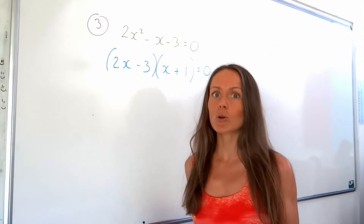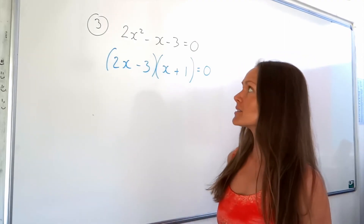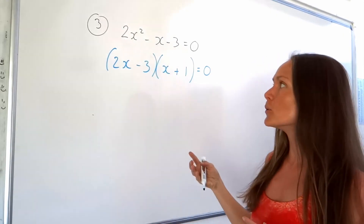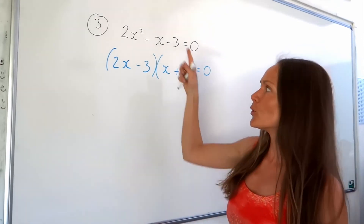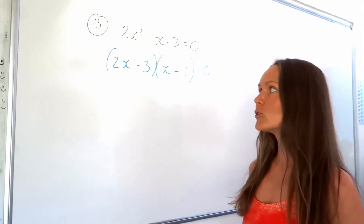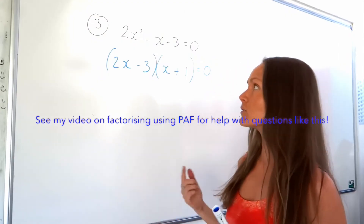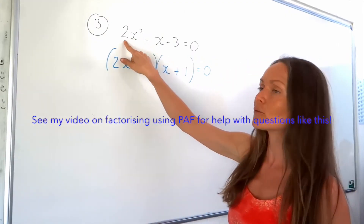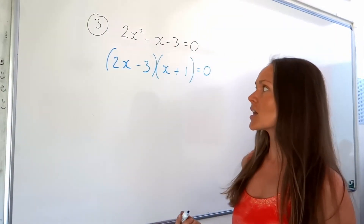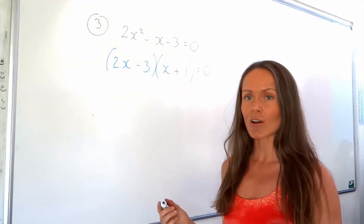Here I've got another quadratic, and just to save time I've factorised this one already. This one's a little bit harder to factorise because there's a number in front of the x squared. You can either put this into brackets using sensible guesswork, or you can use that method PAF — P-A-F — and I explain that in another video on how to factorise when there's a number in front of the x squared. Do your factorising, and then just like before, consider the values of x when you put each bracket equal to 0.